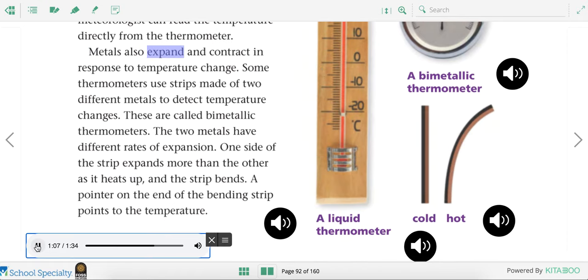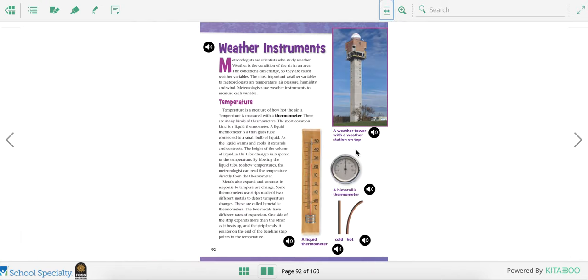Metals also expand and contract in response to temperature change. Some thermometers use strips made of two different metals to detect temperature changes. These are called bimetallic thermometers. The two metals have different rates of expansion. One side of the strip expands more than the other as it heats up and the strip bends. A pointer on the end of the bending strip points to the temperature. So these are different types of thermometers to tell what temperature it is.